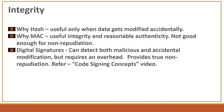Welcome to the integrity video. Here we will talk about the different methods of achieving integrity. We have different methods like hash, MAC, and digital signatures. Hash is useful when data gets modified accidentally. MAC is useful for achieving integrity and reasonable authenticity, but not good enough for non-repudiation because it requires a symmetric key shared between the sender and receiver, and if that key is compromised it would not achieve non-repudiation.